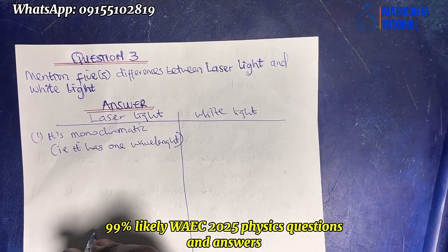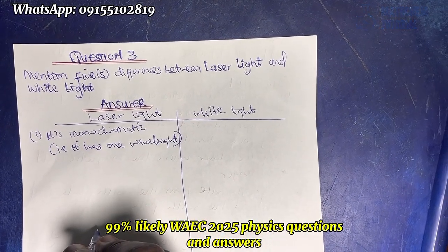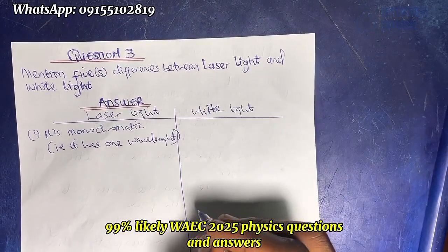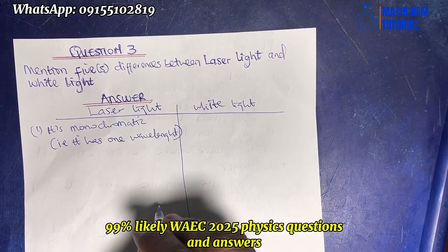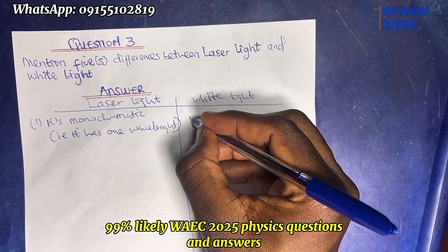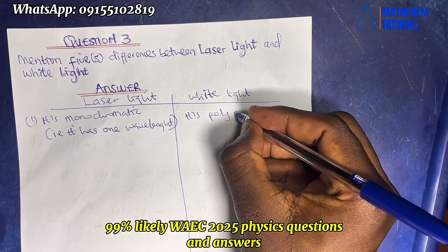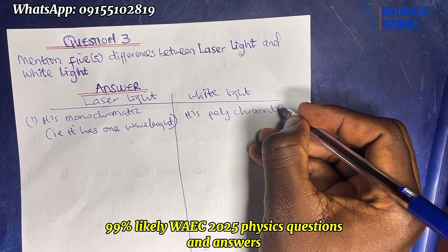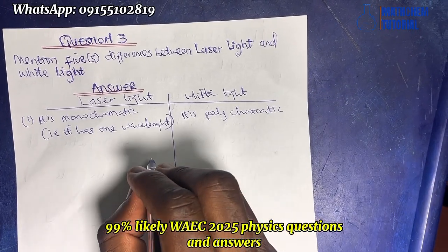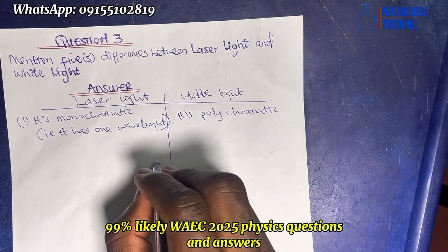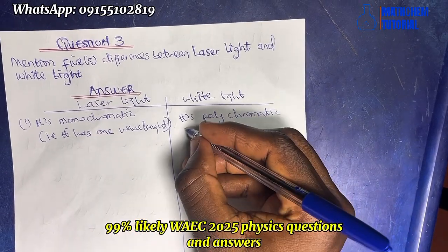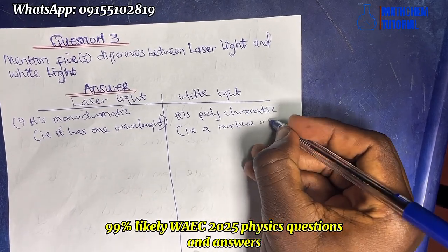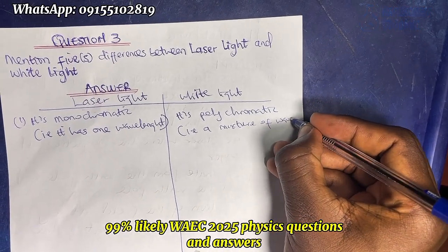White light, by contrast, is polychromatic — that is, it is a mixture of wavelengths.